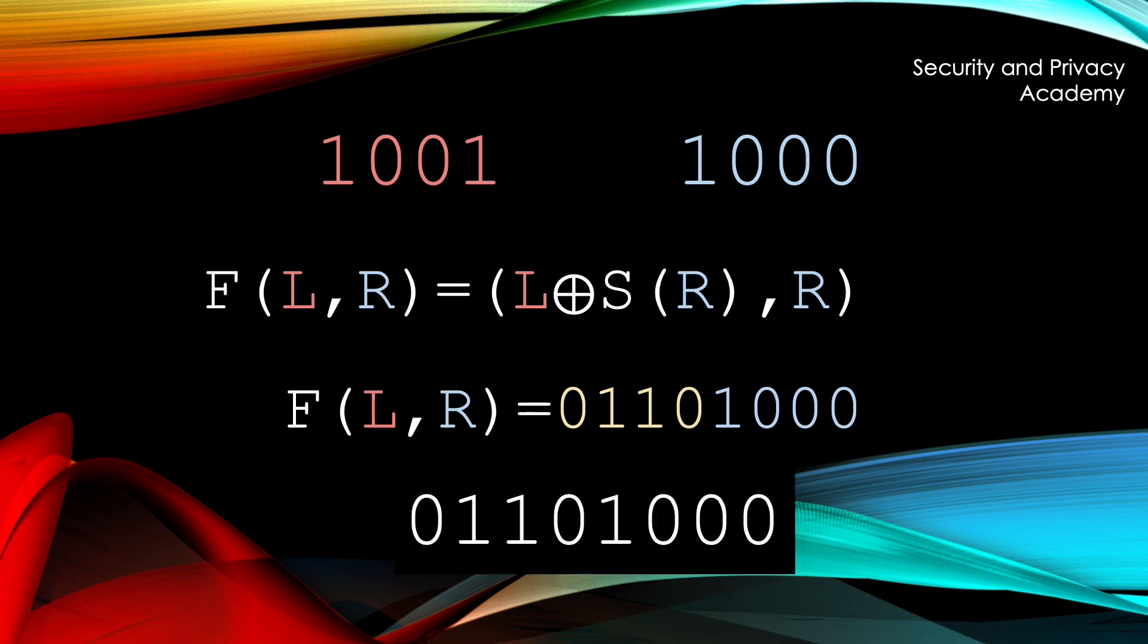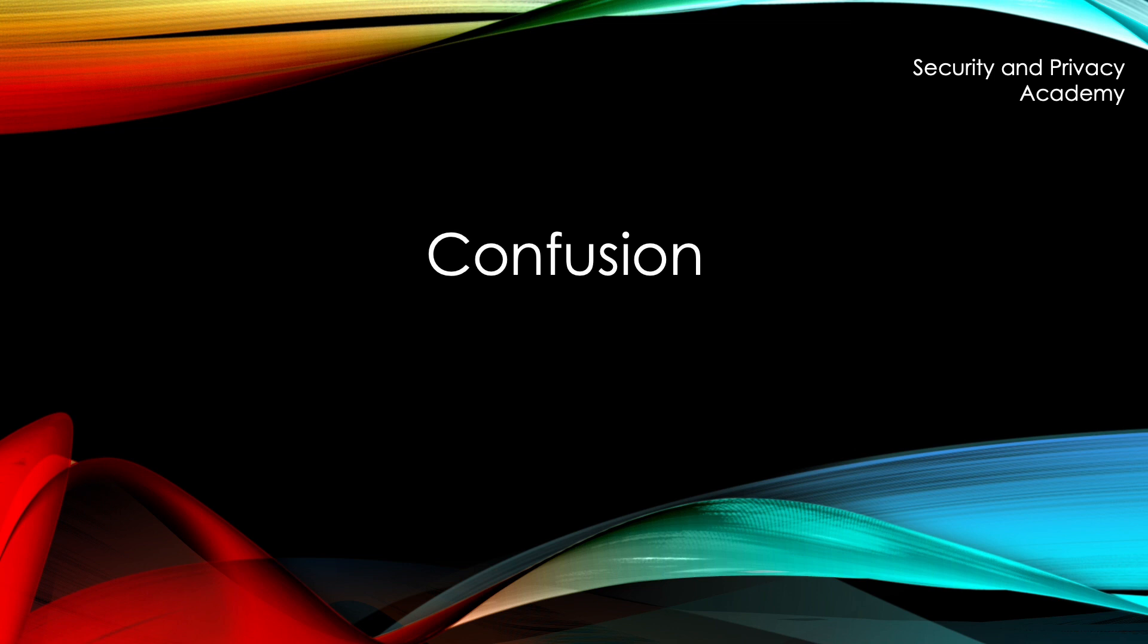This way, the Feistel network ensures confusion and diffusion, both characteristics which are demanded from Shannon of an encryption algorithm.